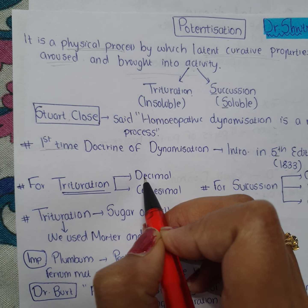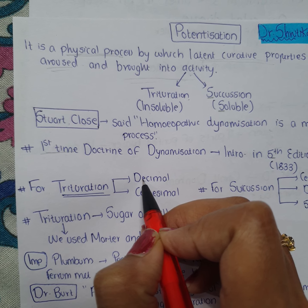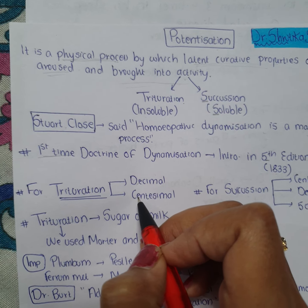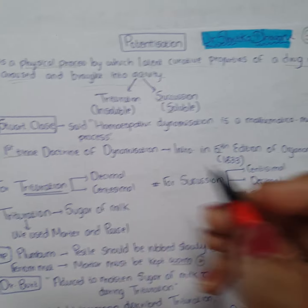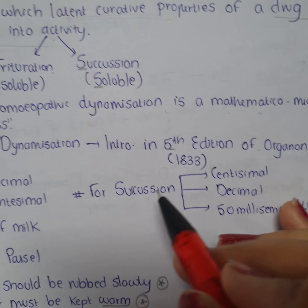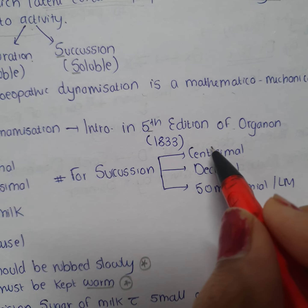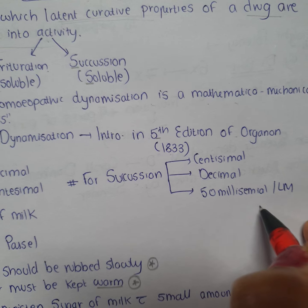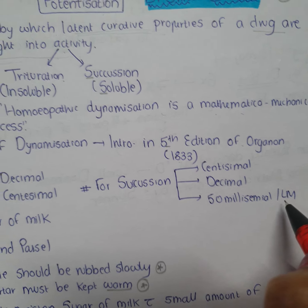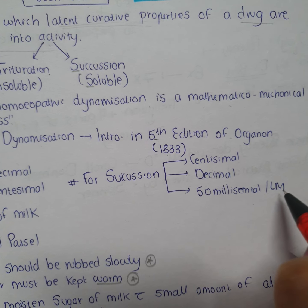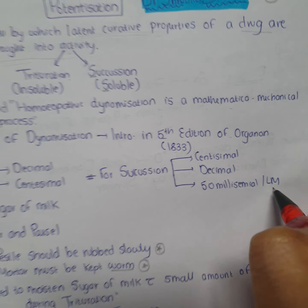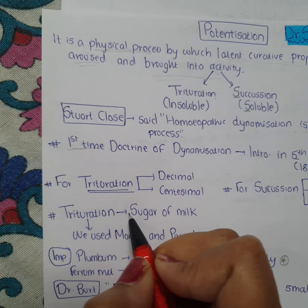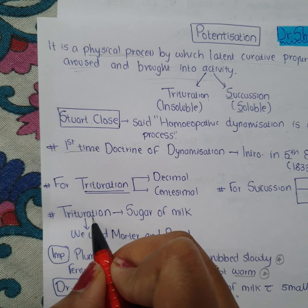For trituration, we use two scales: decimal scale and centesimal scale. For succussion, we use three scales: centesimal, decimal, and 50 millisimal, which is also called LM potency.